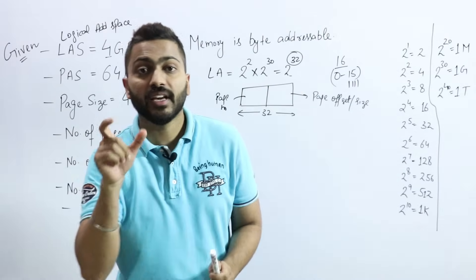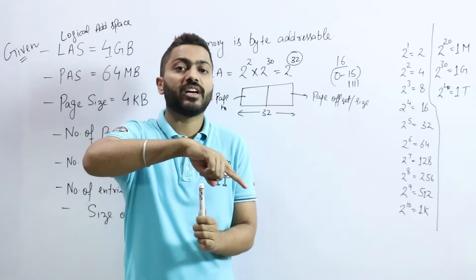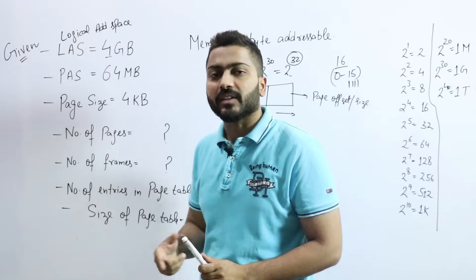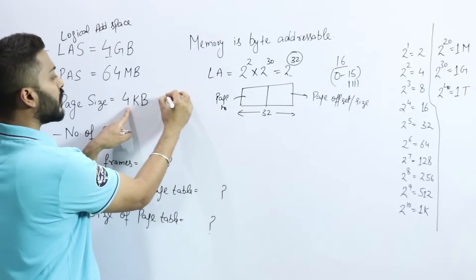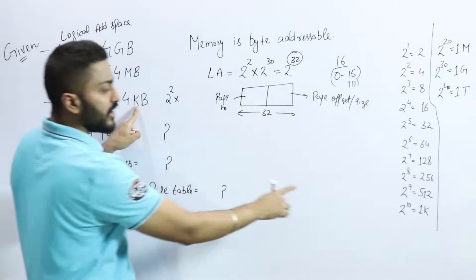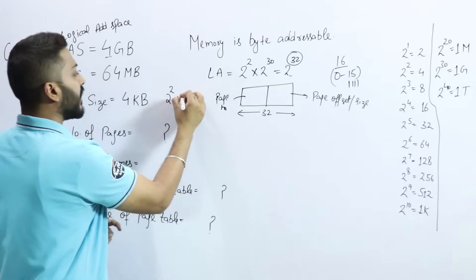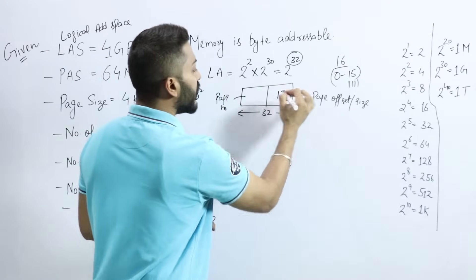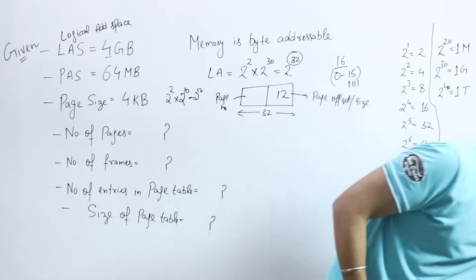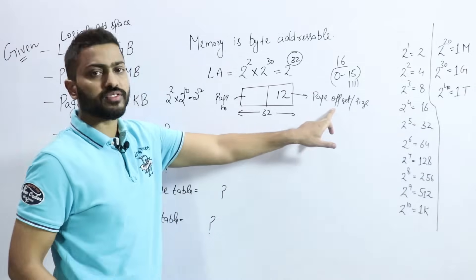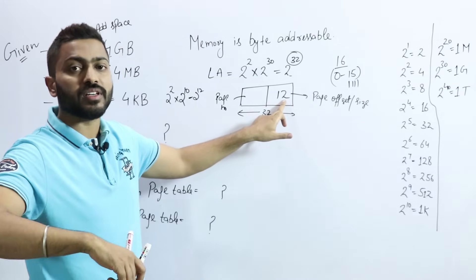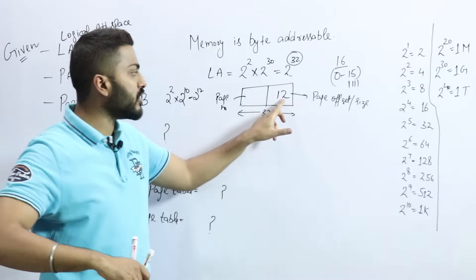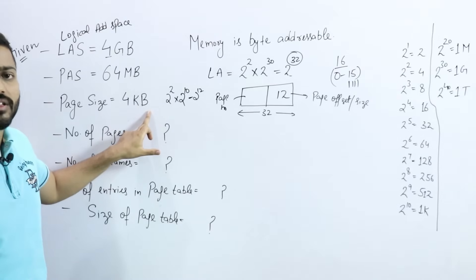Page size 4 KB is a size value, so I need to convert it to bits as well. 4 = 2^2, and K (Kilo) = 2^10. So 4 KB = 2^12. This means 12 bits are used to represent the page offset. If asked for the size of a page, just write 2^12, which equals 4 KB. This is the simple fundamental.